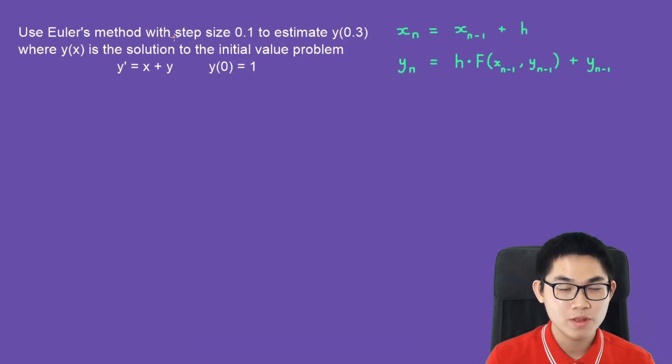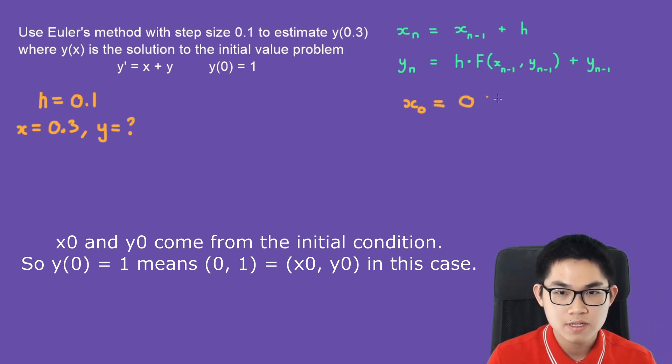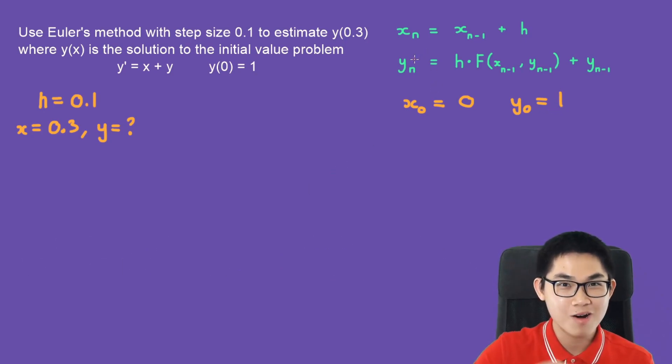Use Euler's method with step size 0.1 to estimate y at 0.3. Where y(x) is the solution to the initial value problem. And we're given this differential equation, y' is equal to x plus y. And the initial value is y at 0 is equal to 1. So let's write down what we know. We know that the step size h is equal to 0.1. We want to find y at 0.3. So basically, when x is equal to 0.3, what is y going to be? And we're also given x at 0 is equal to 0. Then y at 0 is equal to 1.